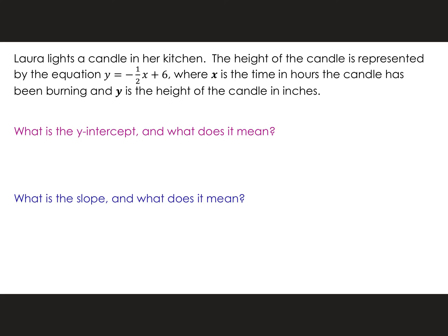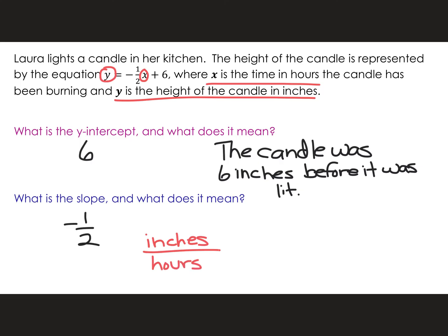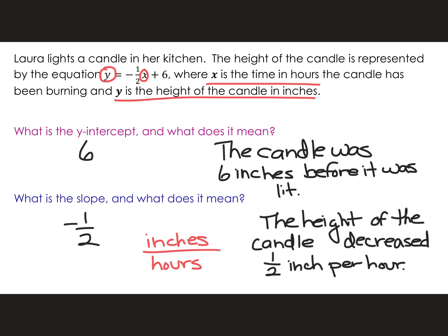Laura lights a candle in her kitchen. The height of the candle is represented by the equation y equals negative one-half x plus six, where x is the time in hours the candle has been burning, and y is the height of the candle in inches. What's my y-intercept? Six. What's my slope? Negative one-half. What does the six stand for? That's the height of the candle before it was lit. What about the slope? My dependent label is y — the height of the candle in inches, so 'inches.' My x is time in hours, so 'hours.' It's negative one-half inches per hour. The height of the candle decreased one-half inch per hour.